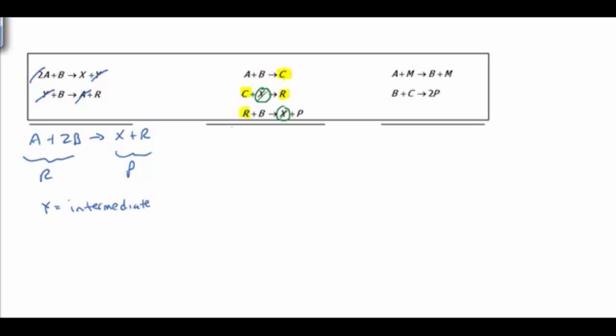So if we add this reaction up, we get a plus 2b produces our product p. And here we have reactants. We have our product. We also have intermediates, two different intermediates, c and r. And our catalyst would be x.